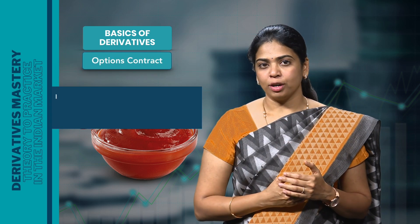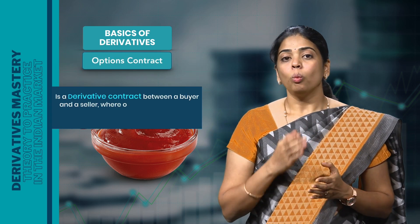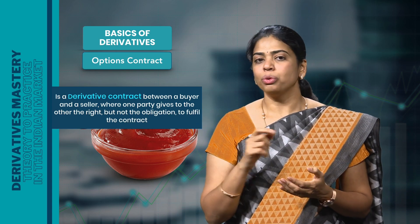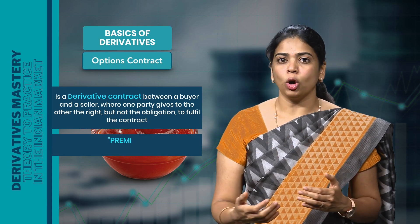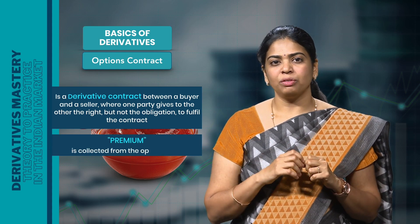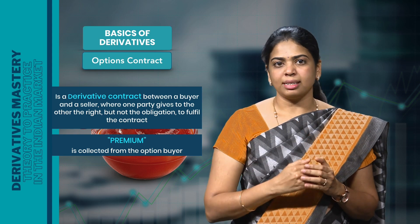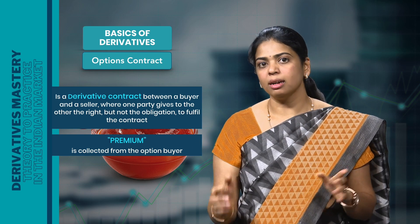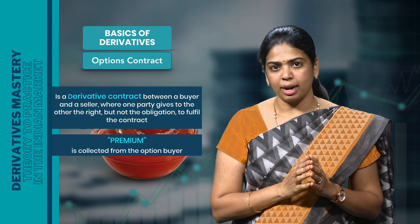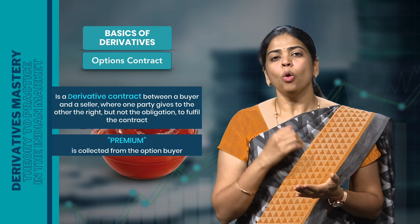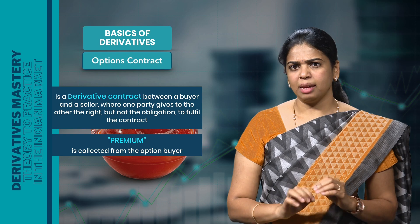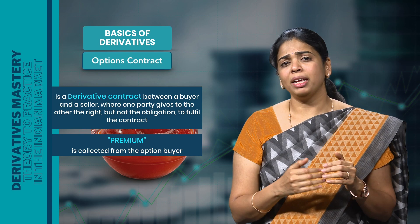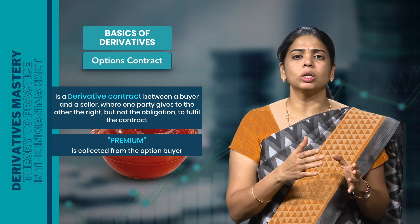An option is a derivative contract between a buyer and a seller where one party gives the other party the right but not the obligation to fulfil the contract. In return for granting the option, a premium is collected from the option buyer. In the previous example of futures contracts, both the buyer and the seller are obliged to fulfil the contract. But if the parties want to fulfil the contract only if the situation favours them, then they should enter into an option contract instead of a futures contract.